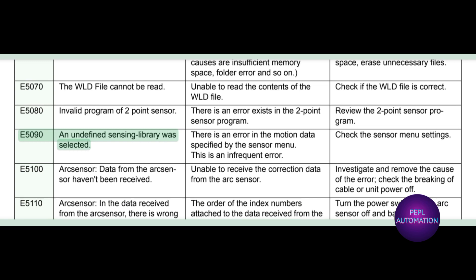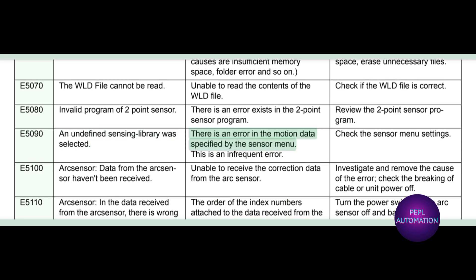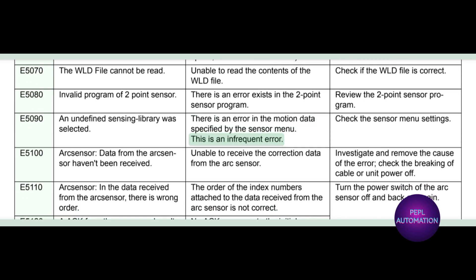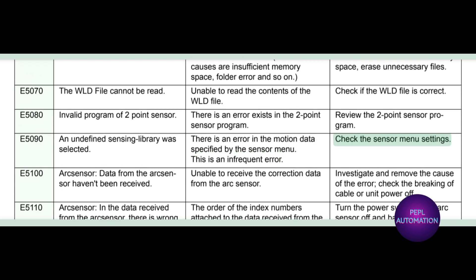E5090: an undefined sensing library was selected. There is an error in the motion data specified by the sensor menu. This is an infrequent error. Check the sensor menu settings.